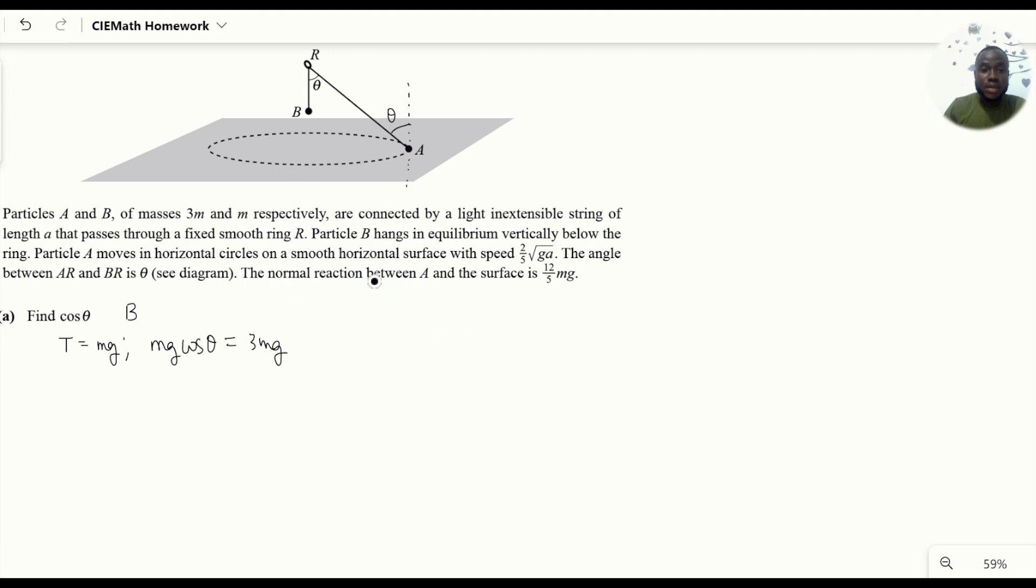But there's also a normal reaction (12/5)mg if A is resting or moving on this surface and it's not going down. That reaction acts upwards. So there's a component of T acting upwards, there's a reaction from the plane, and then there's the weight of A acting vertically downwards.